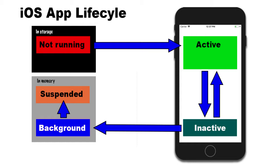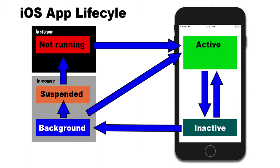As your device needs more memory, it may choose to move an app from the suspended state into the not running state to retrieve that memory space. An app in the background or suspended state may become active again when we bring it back to the forefront. The concern here is that if you have live data or system settings that haven't been saved, there's a risk of losing that information — this is called persistence.